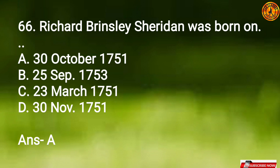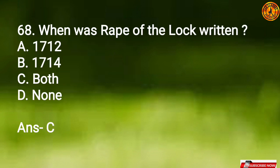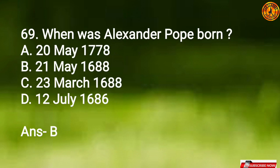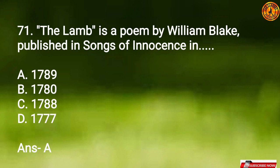Question 66: Richard Brinsley Sheridan was born on Option A, October 30, 1751. Question 67: William Blake was born on Option C, 28th November 1757. Question 68: When was 'Rape of the Lock' written? Option C, both — yeh 2 baar publish hua tha: 1712 mein bhi, aur 1714 mein dusre cantos ismein add kiye gaye the. Question 69: When was Alexander Pope born? Option B, 21st May 1688. Question 70: When were the poems 'The Tiger' and 'The Fly' from Songs of Experience published? Option A, 1794. Question 71: 'The Lamb' is a poem by William Blake published in Songs of Innocence in Option A, 1789.